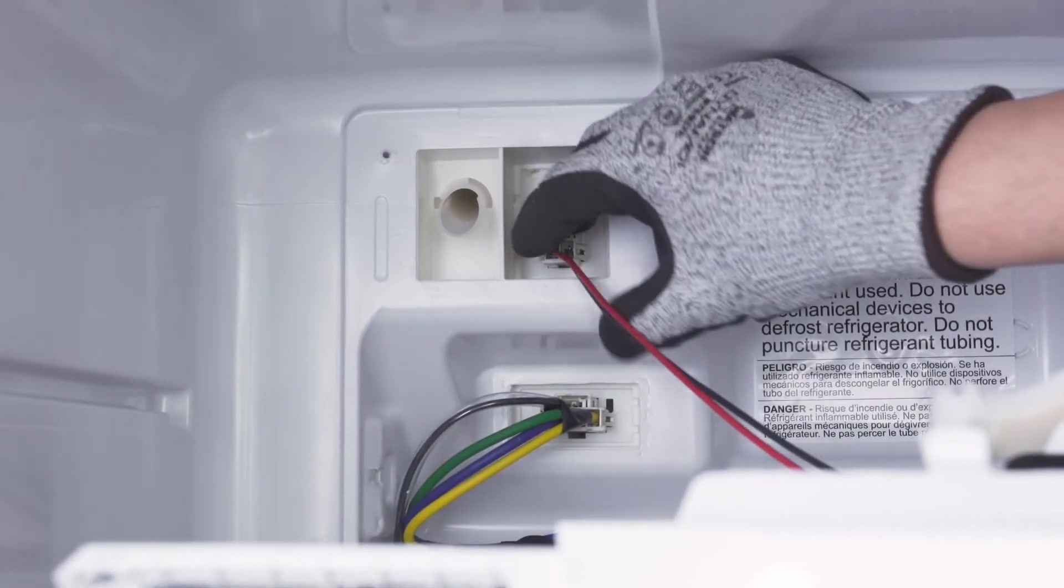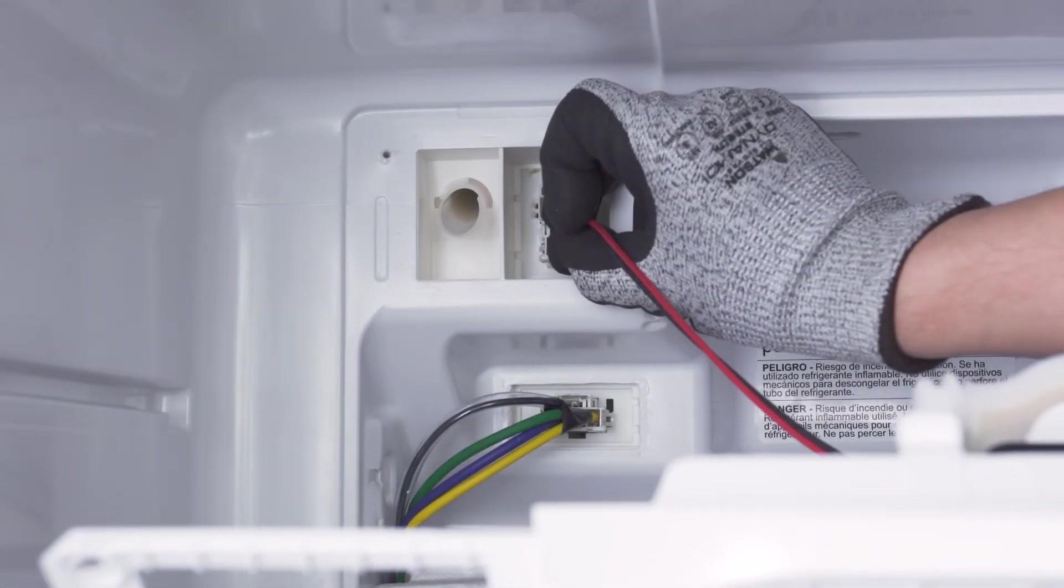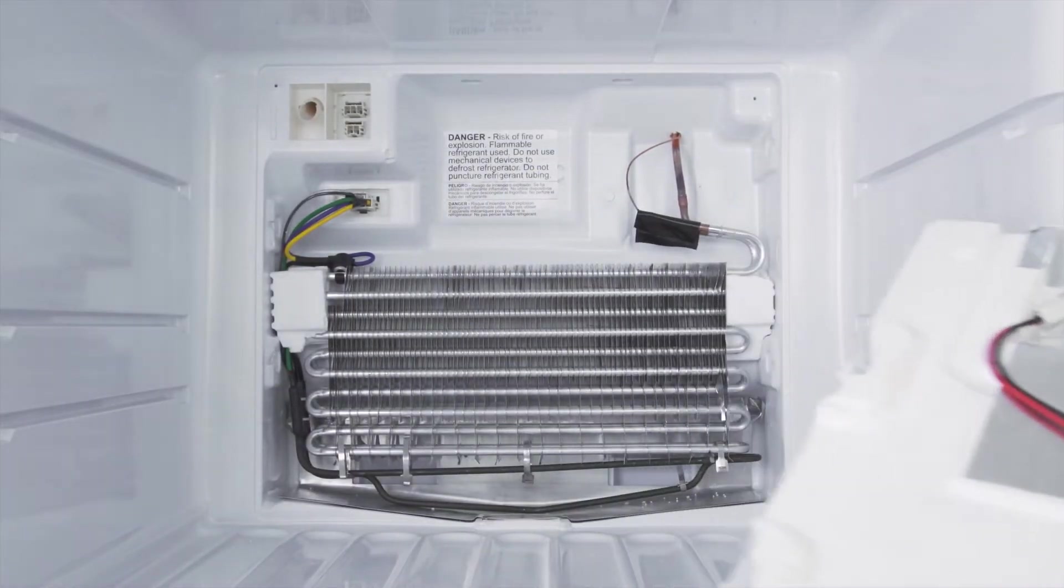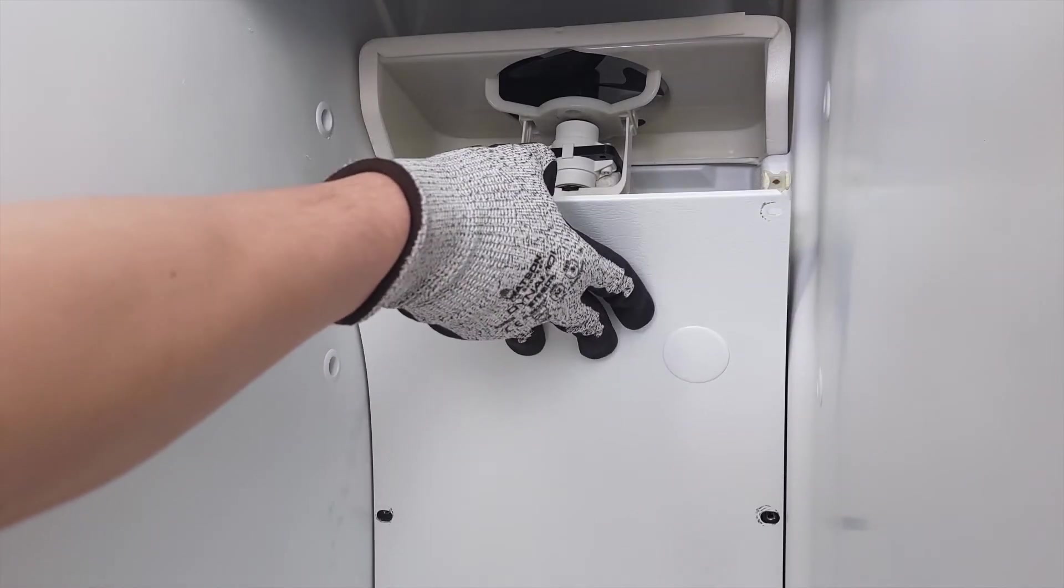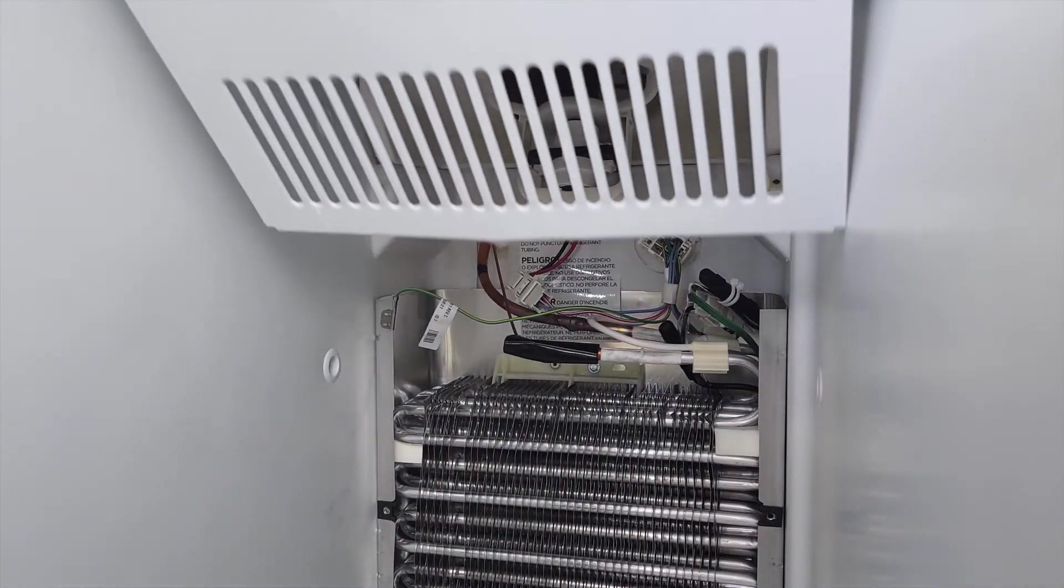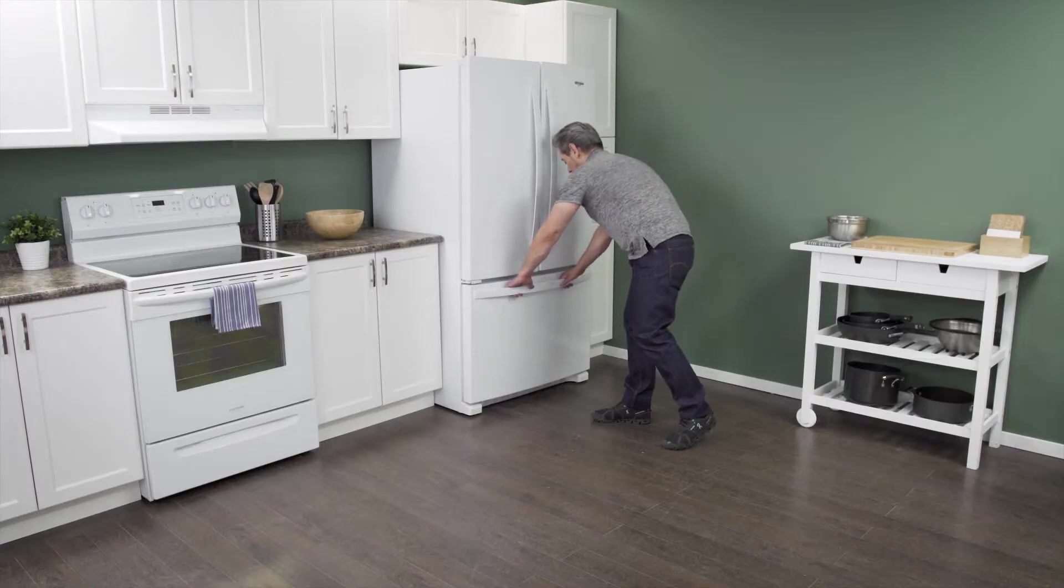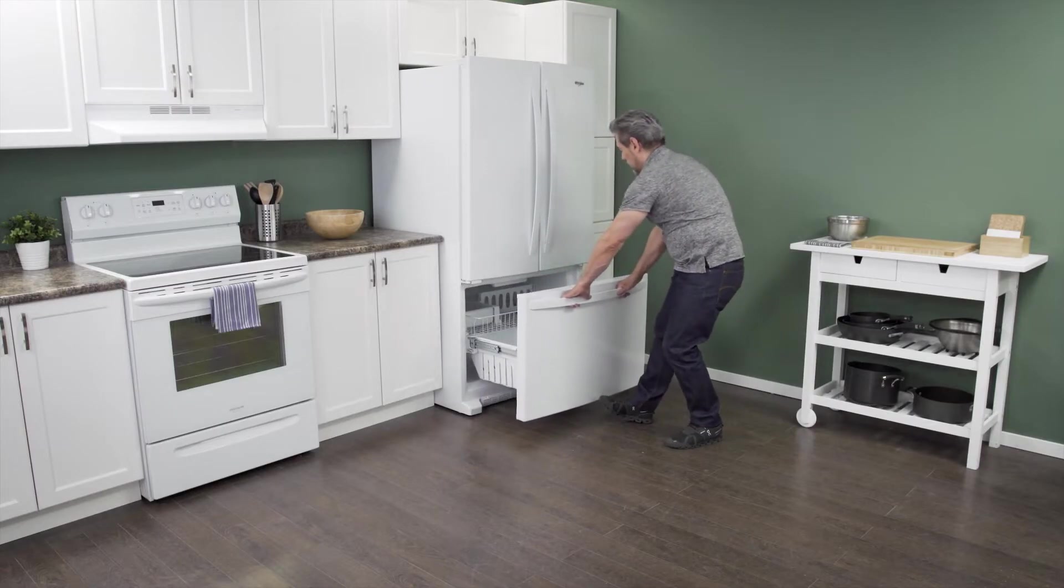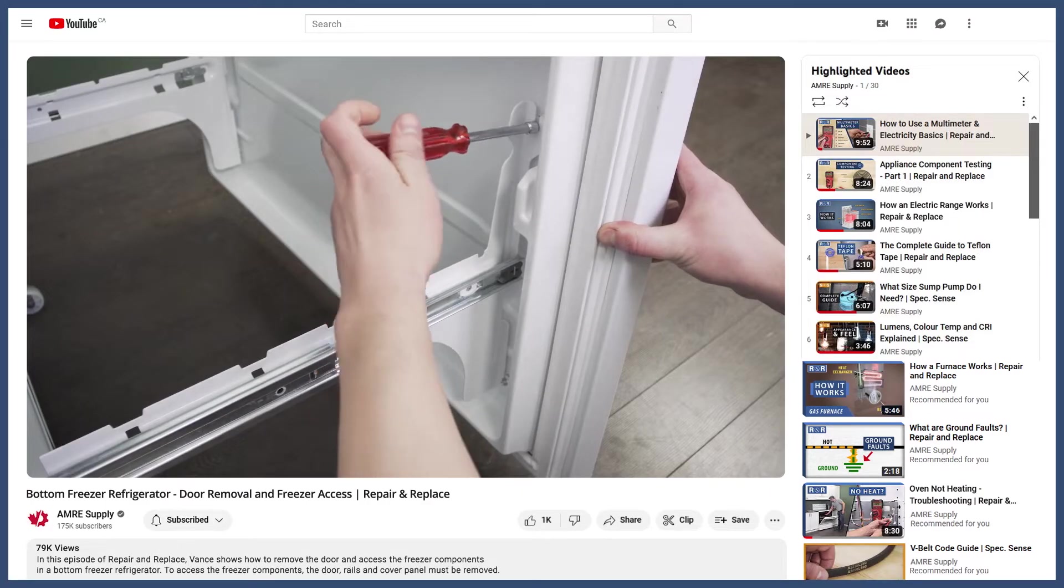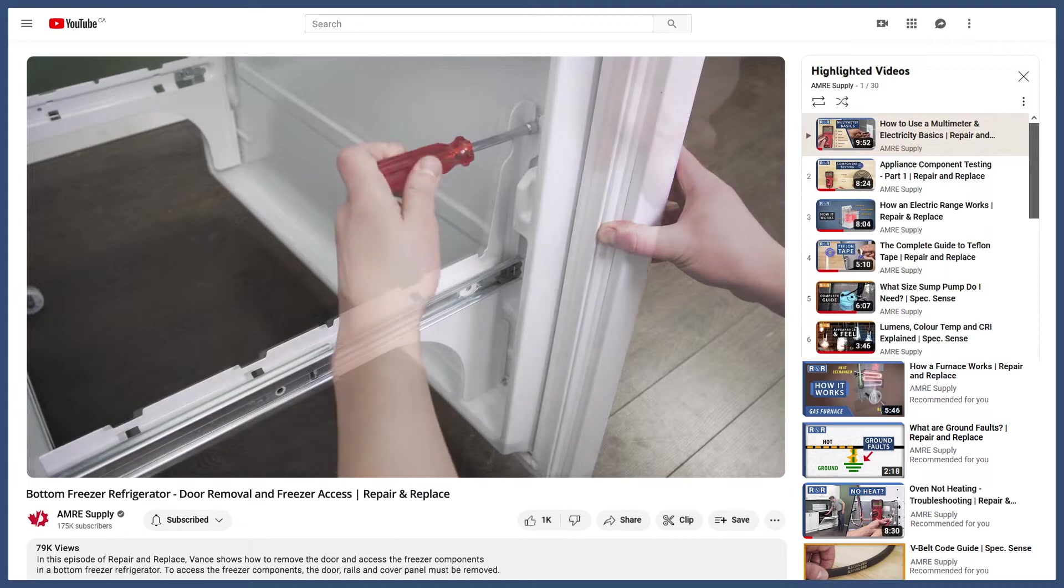If the fan is mounted to the panel, you might need to disconnect the wire harness. In a side-by-side fridge, the steps are the same. If your model has a bottom freezer, then you'll have to remove the door to access the freezer components. You can see how to do this in the video linked below.